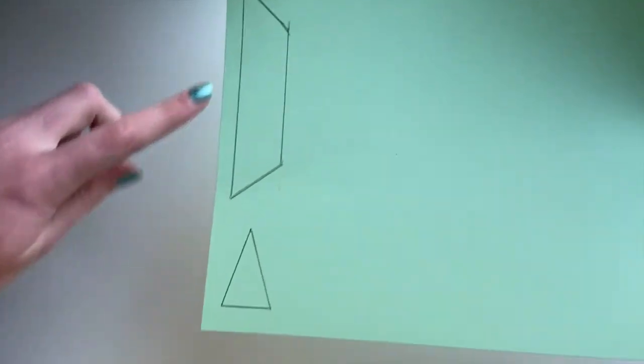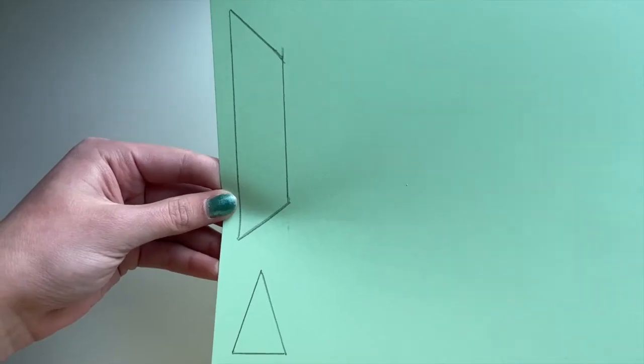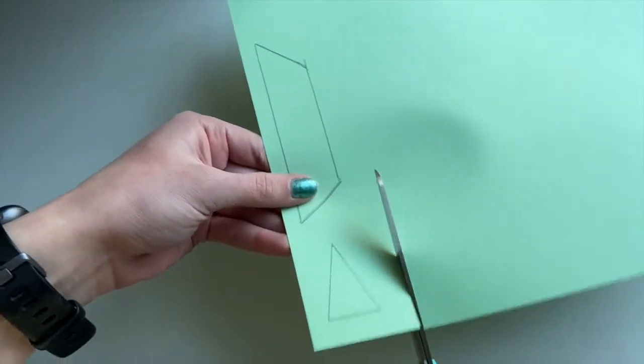Here are both the shapes you just drew, a trapezoid and a triangle. Then you're going to cut out both the triangle and the trapezoid.